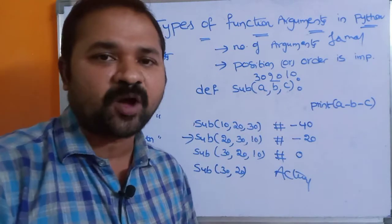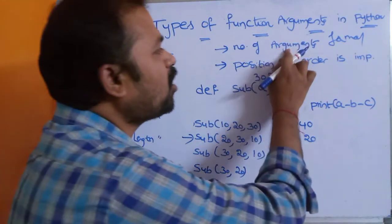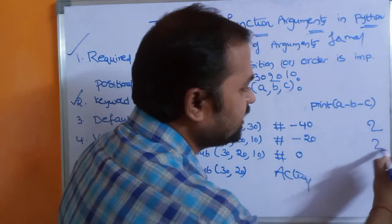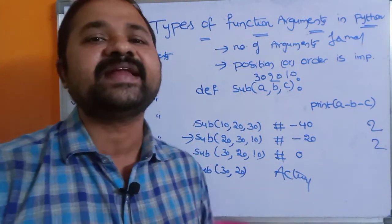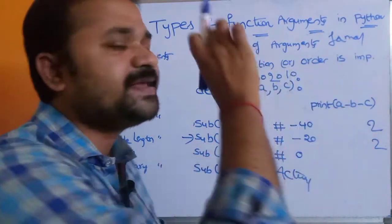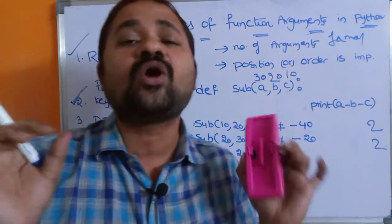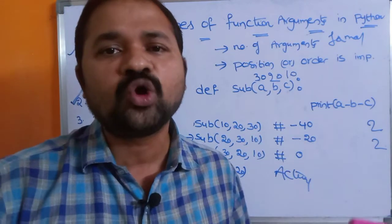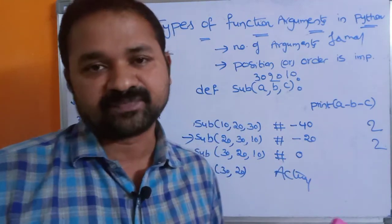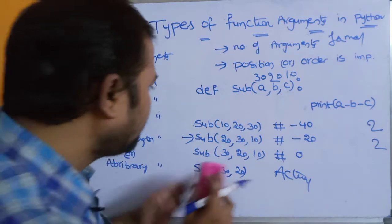We can overcome this problem with keyword arguments. In keyword arguments, the number of arguments must still be the same in the function definition and function call. However, the key difference is that order is not important. We provide values to the arguments using keywords, where a keyword is nothing but the name of the argument.